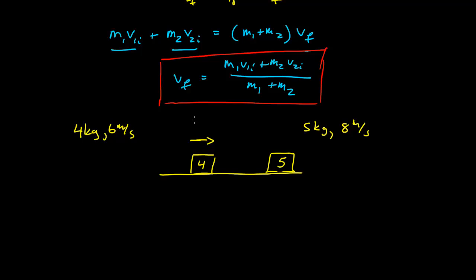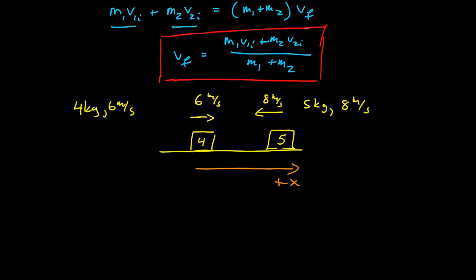So four was going one direction at six meters per second, and the other one was going the other direction at eight meters per second. We know they were moving toward each other. So I need to set up a coordinate system.